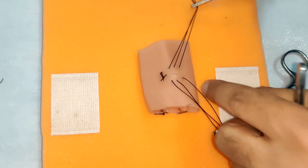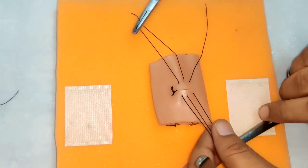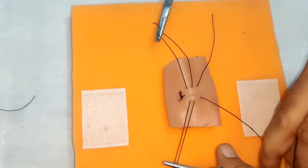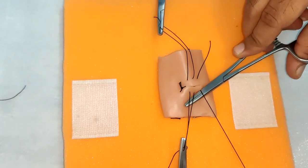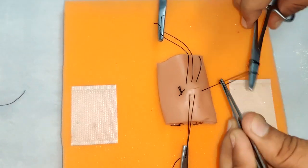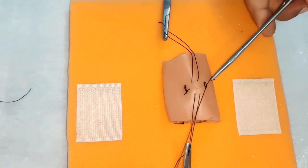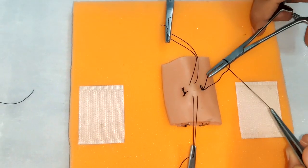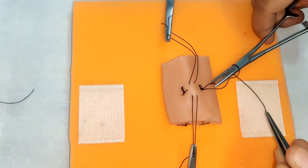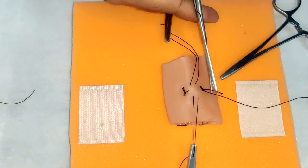Now again we will suture the lower end. We start again by a simple instrument tie and finish by cutting it.